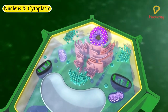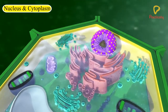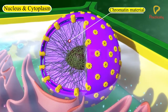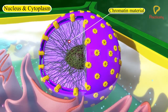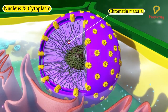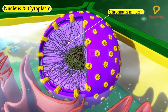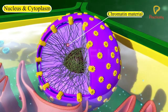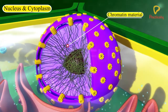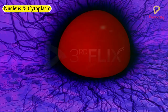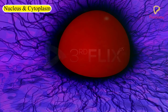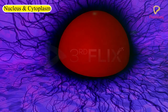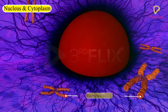In a cell which is not dividing, this DNA is present as part of chromatin material. Chromatin material is visible as an entangled mass of thread-like structures. Whenever the cell is about to divide, the chromatin material gets organised into chromosomes.